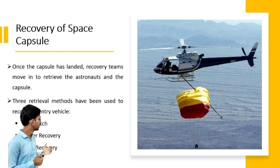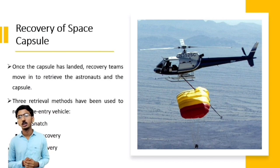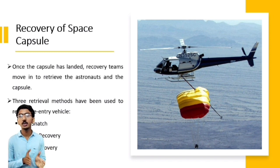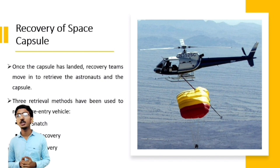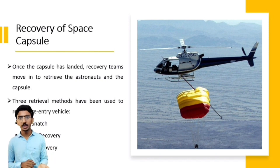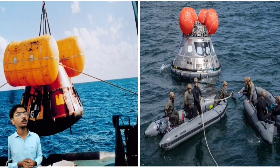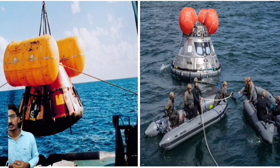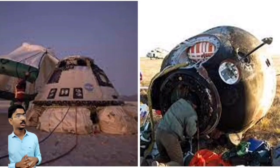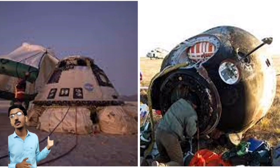Next is recovery of space capsule. Once the capsule has landed, recovery teams move in to retrieve the astronauts and the capsule. Three retrieval methods have been used to recover reentry vehicles: air snatch recovery, water recovery and land recovery. This image shows how crew recovers a space capsule from the ocean as part of water recovery. Another image shows land recovery of a space capsule returning from space.